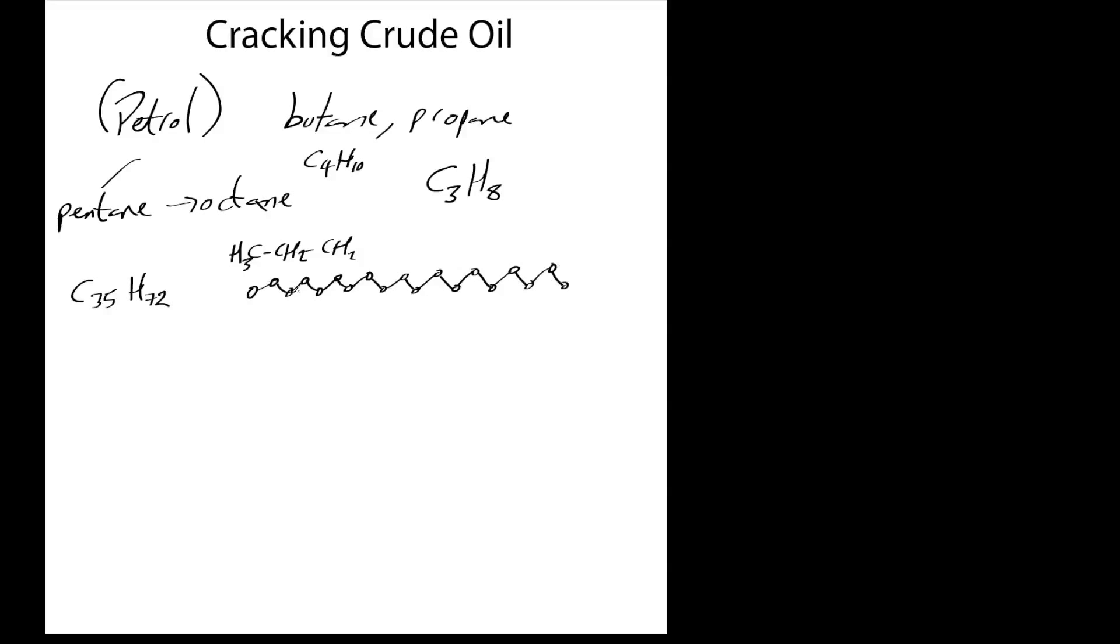How many have we got there? We got 1, 2, 3, 4, 5, 6, 7, 8, 9, 10, 11, 12, 13, 14, 15, 16, 17, 18, 19 carbons. So this is C19, and 19 times 2 is 38 plus 2 equals 40, so C19H40. Here we go, we've got quite a long chained hydrocarbon there.